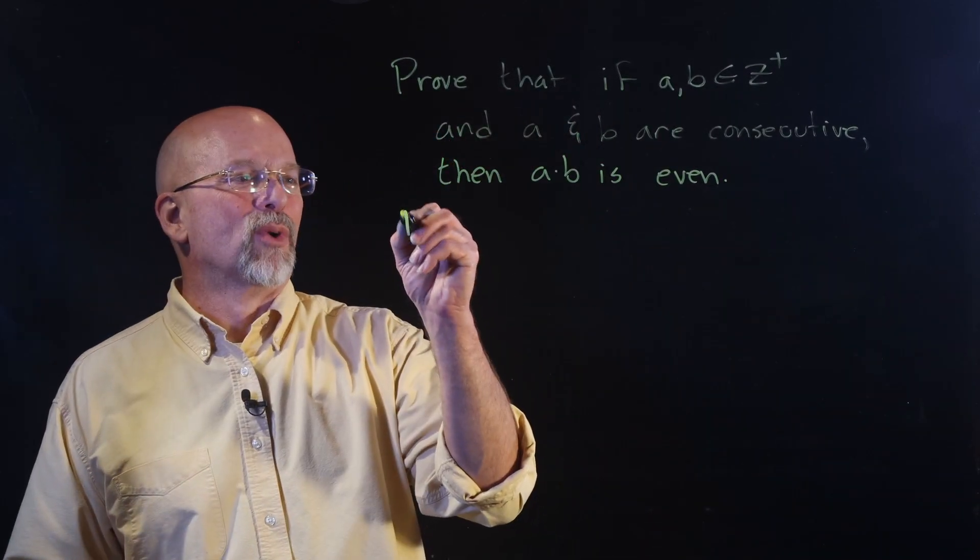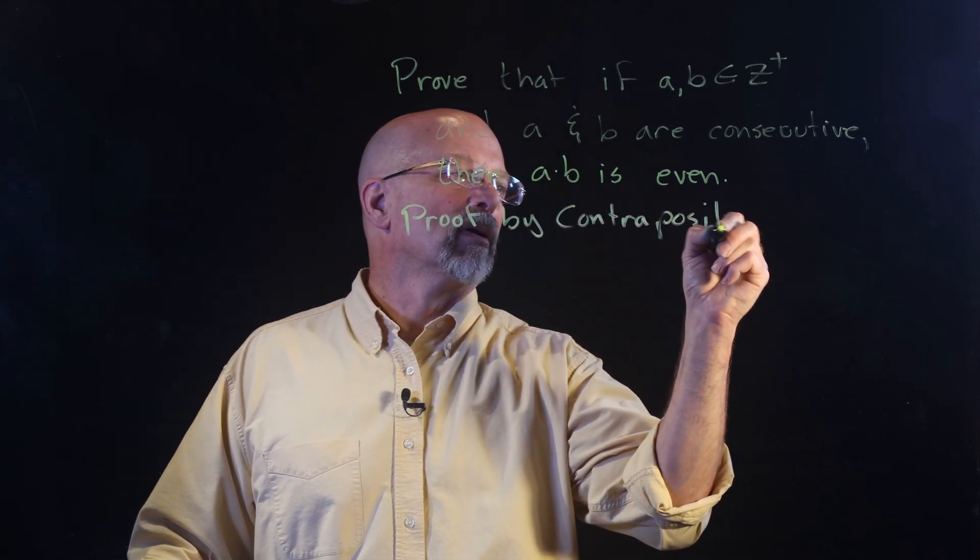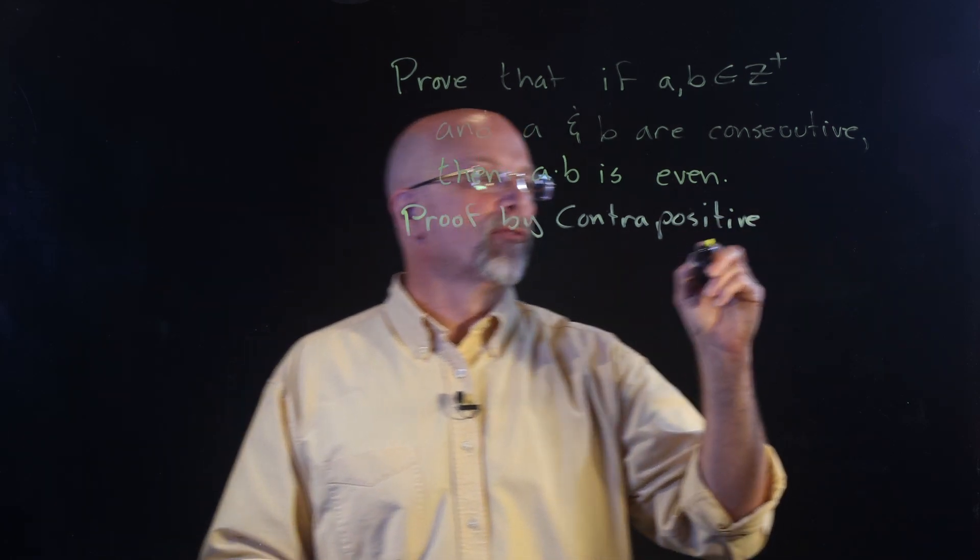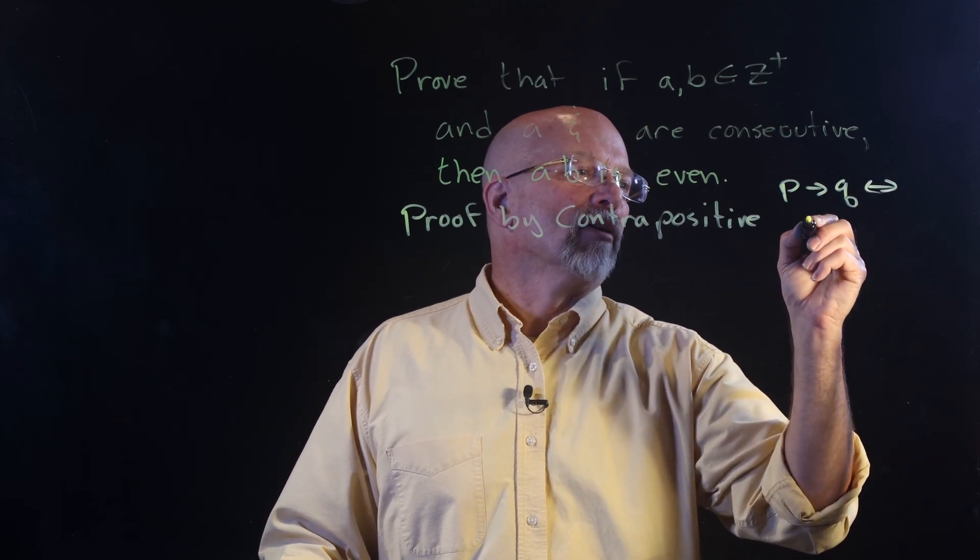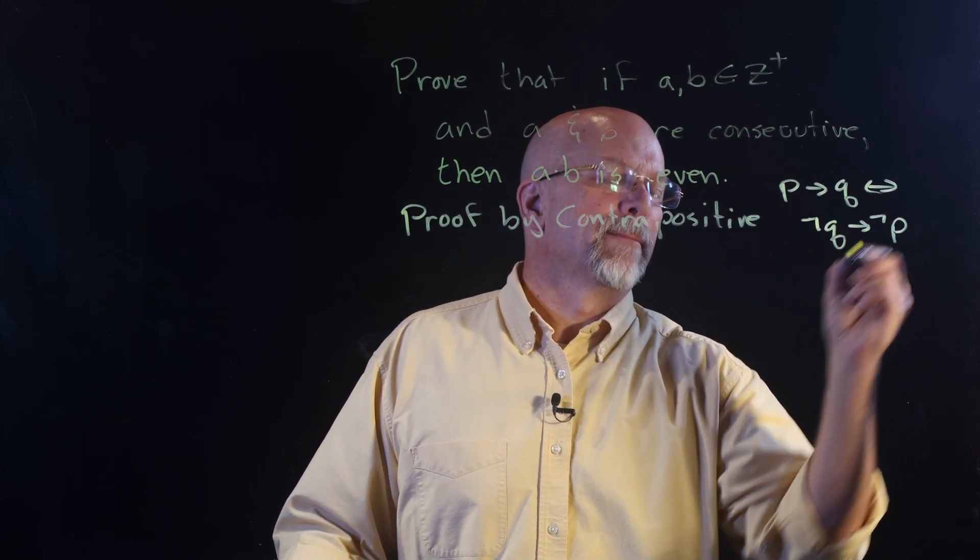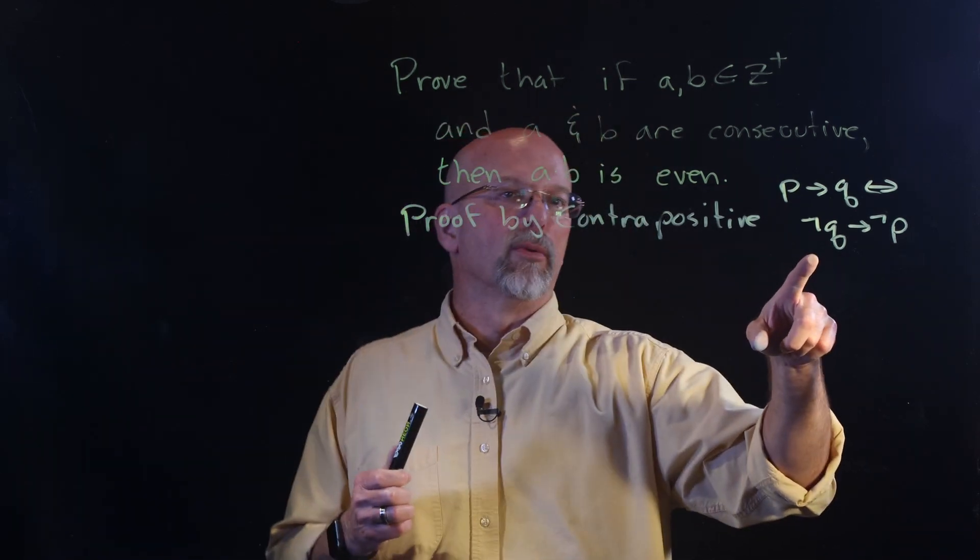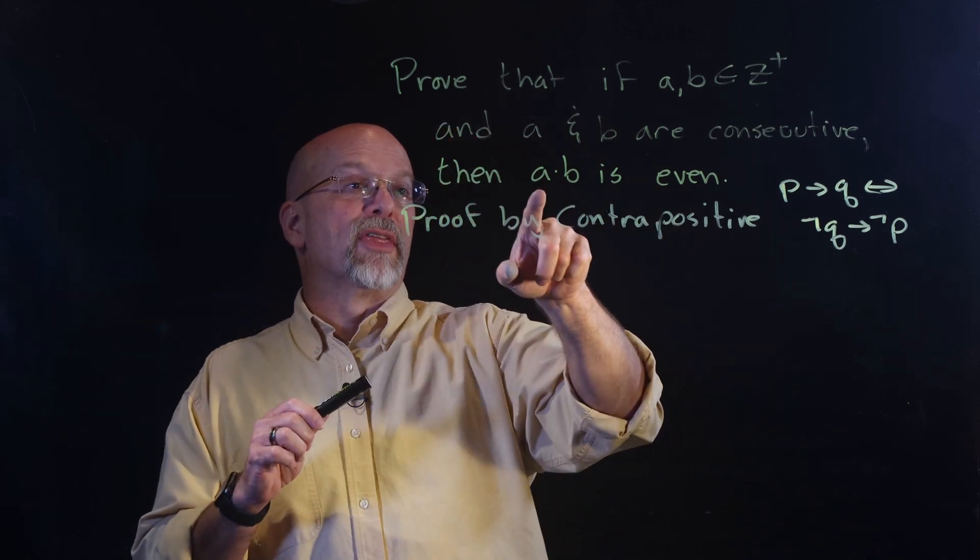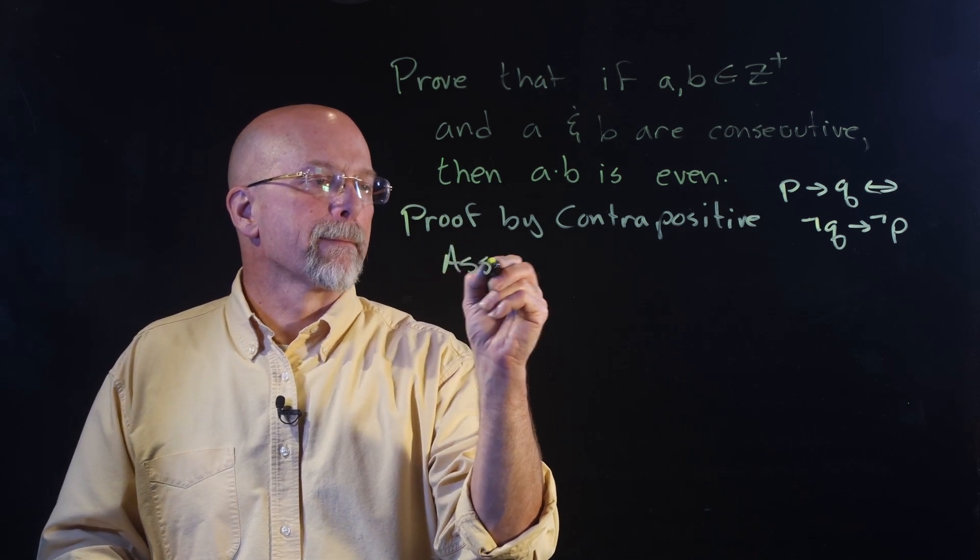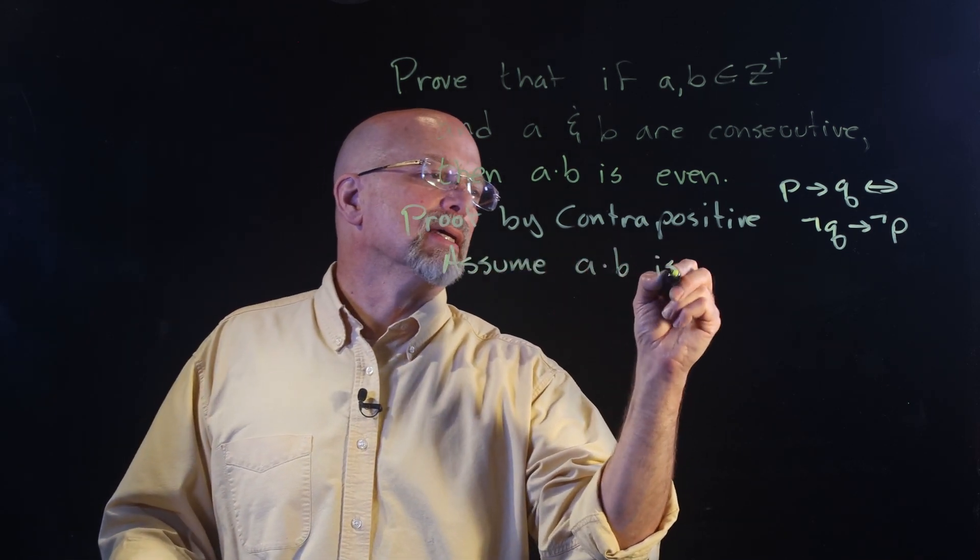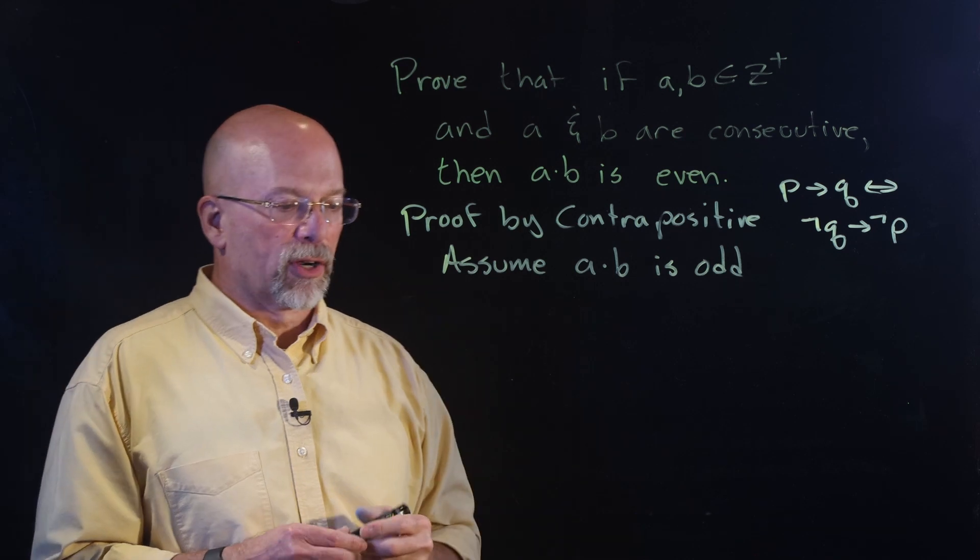And the last one, proof by contrapositive. Now, if you remember, the proof by contrapositive said that p implies q, if and only if not q implies not p. And so, the idea is that we are going to assume q bar. We're going to assume the not of this. So, we're going to start out by assuming a times b is odd, right? That's the negation of our q.